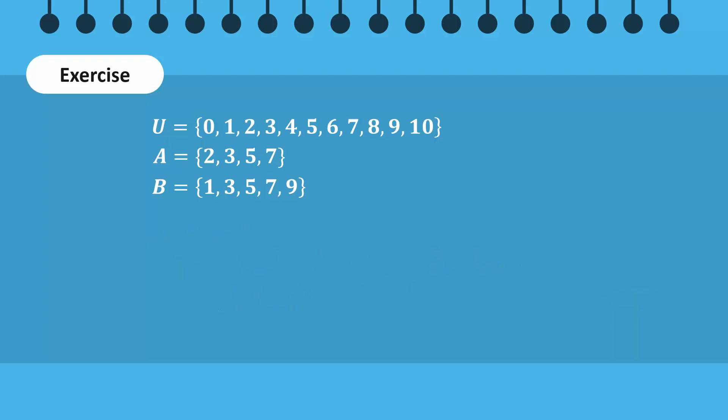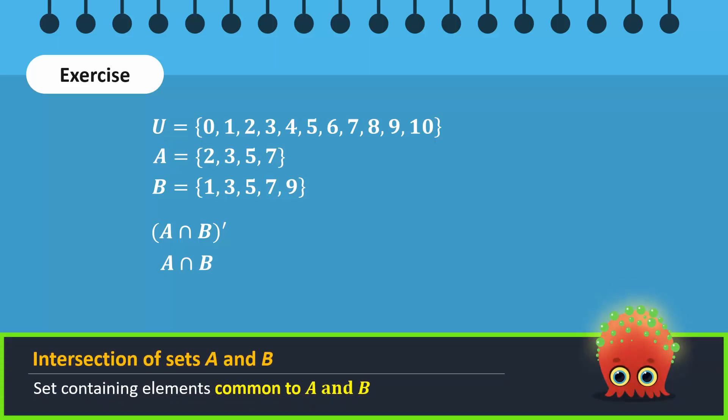For the second question, first find A intersection B since it's inside the brackets. Recall that intersection is a set that contains the common elements. The common elements of A and B are 3, 5, and 7.